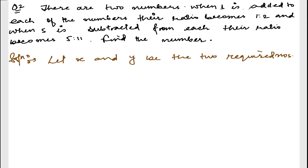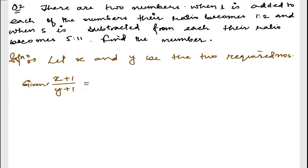When one is added to each of the numbers, the ratio becomes 1 to 2. So if you add one, you get (x + 1) and (y + 1). This ratio is given, so therefore (x + 1) divided by (y + 1) is equal to 1 by 2.